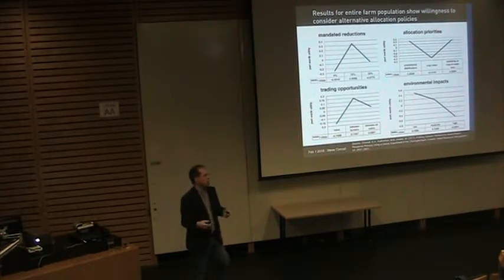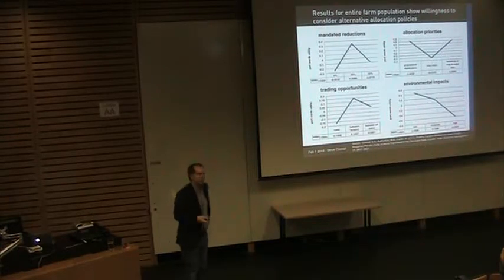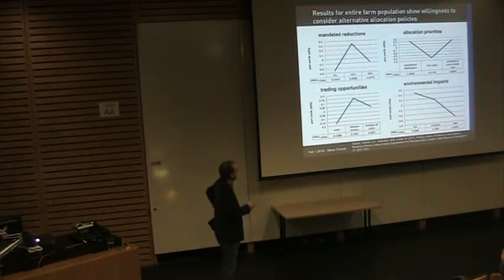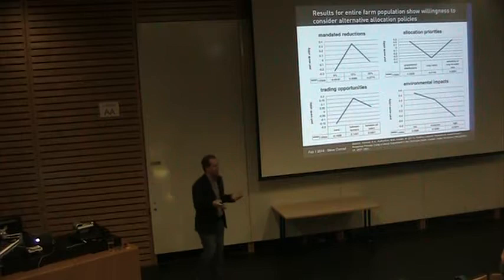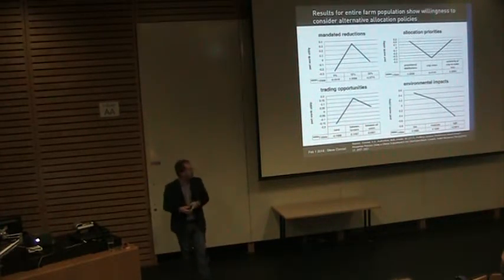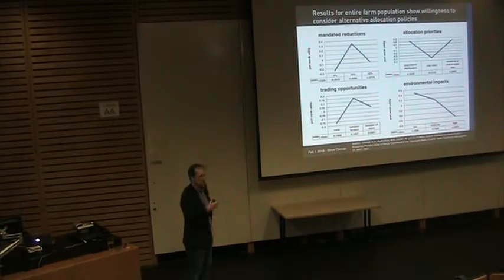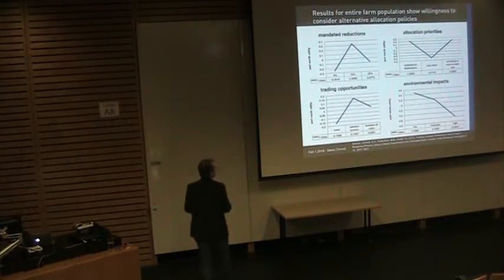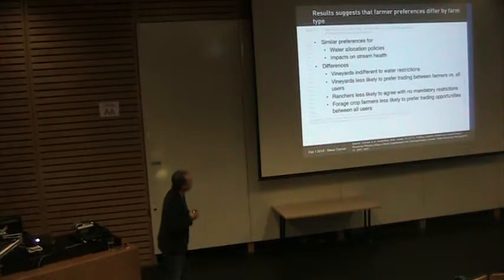The most startling finding was around trading. As a whole, farmers preferred opportunities for trading — either trading water between farmers, which was most preferred, or trading between all users — over not trading at all. Right now you cannot trade water in British Columbia, but there is an underground trading system operating in the Okanagan where farmers work together. Plans with low environmental impact were also preferred over those with high environmental impact, reflecting the strong environmental attitudes in BC.